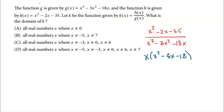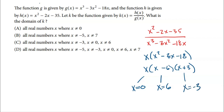Continuing to factor, x squared minus 3x minus 18 factors into (x minus 6)(x plus 3). So the denominator factors as x(x minus 6)(x plus 3), meaning x equals 0, x equals 6, and x equals negative 3 all turn the denominator to zero and must be excluded from the domain. The question is only asking about domain — not holes or vertical asymptotes — so any value that turns the denominator to zero is excluded. Choice C is the correct answer: all real numbers except negative 3, 0, and 6.